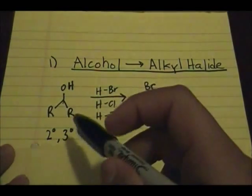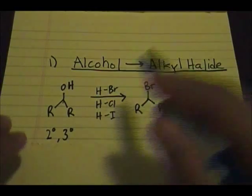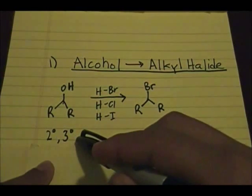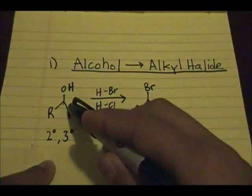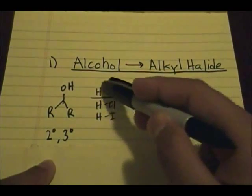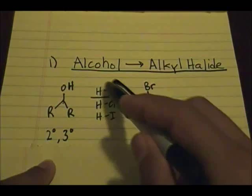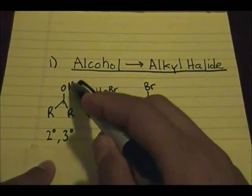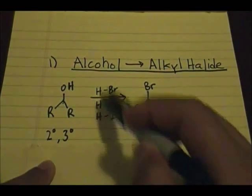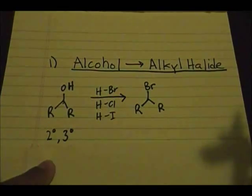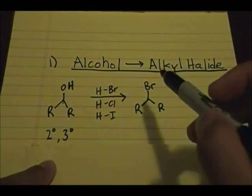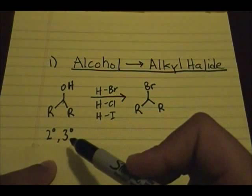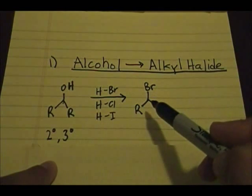In this example, which applies to both secondary and tertiary alcohols: if you start off with a secondary alcohol and use one of these reagents — hydrobromic acid if you want to put a Br in the position of the OH, hydrochloric acid if you want to put a chlorine, or HI if you want an iodine — it will give you this as your product.